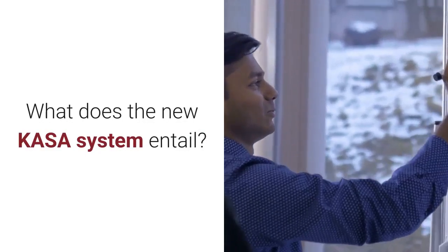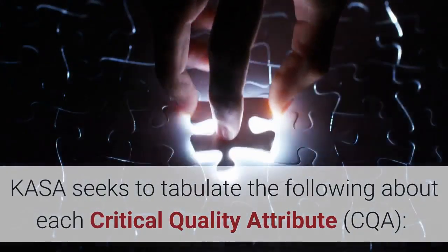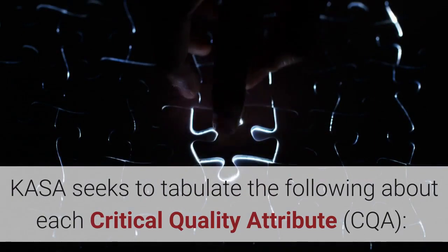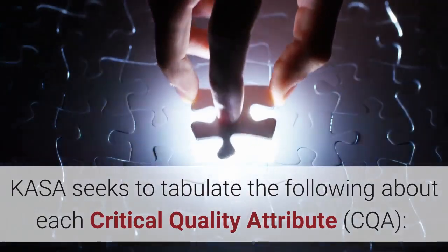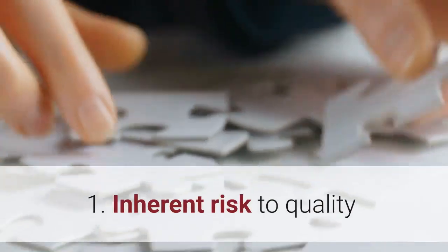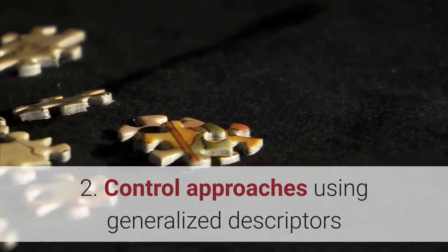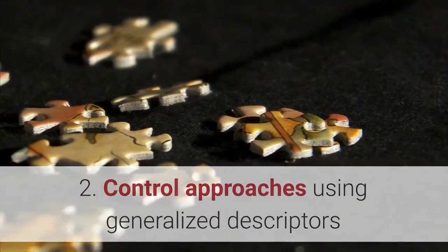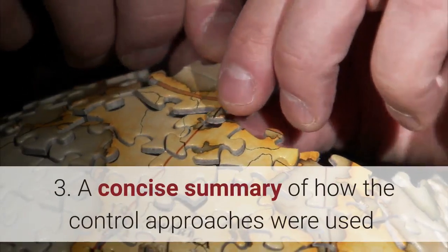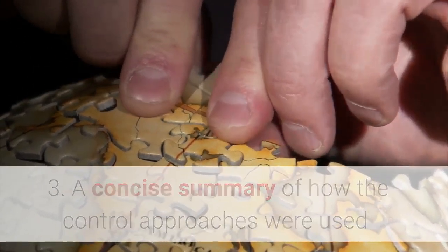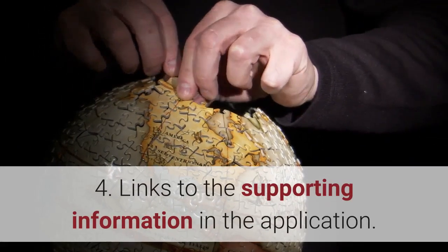What does the new CASA system entail? CASA seeks to tabulate the following about each critical quality attribute, or CQA: 1) inherent risk to quality; 2) control approaches using generalized descriptors; 3) a concise summary of how the control approaches were used; and 4) links to the supporting information in the application.